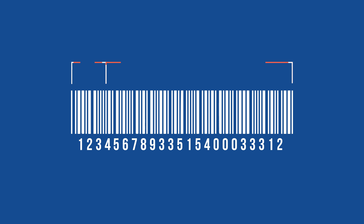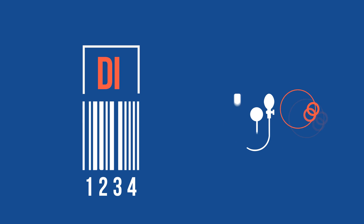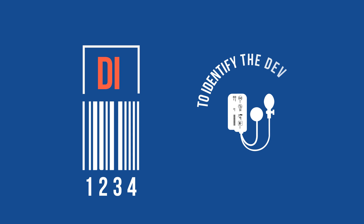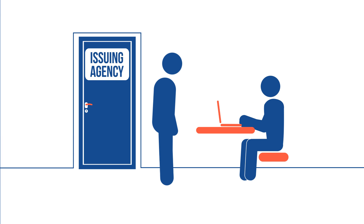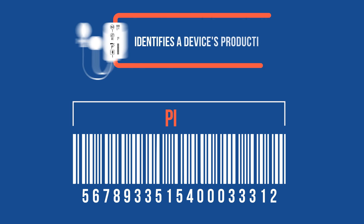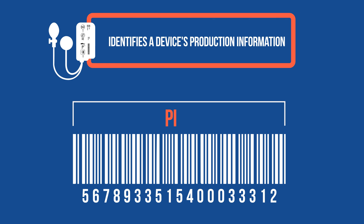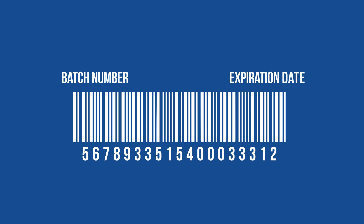A UDI consists of two parts: a device identifier and a production identifier. The DI portion of a UDI is used to identify the device type, and device identifiers are provided by an FDA-accredited issuing agency. The PI portion of a UDI identifies a device's production information, such as its batch number or its expiration date.